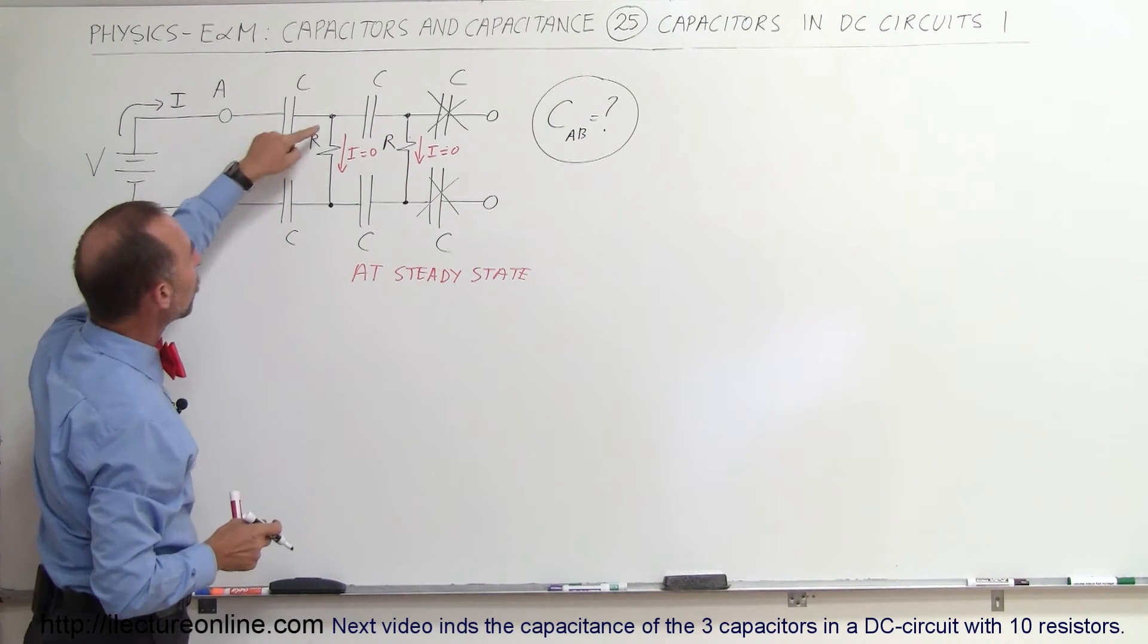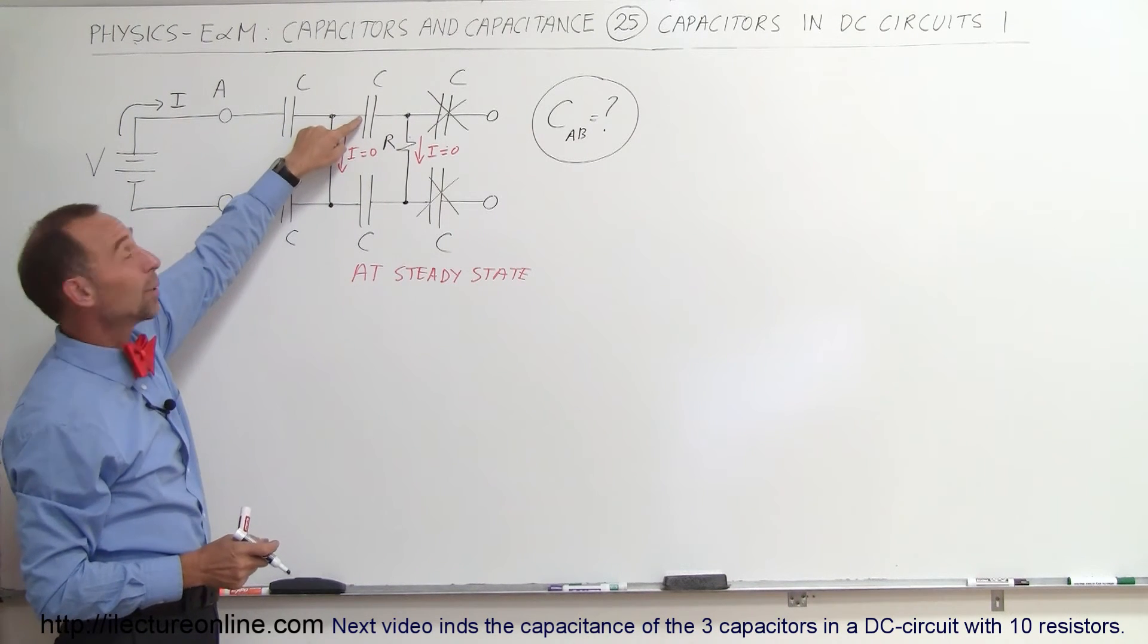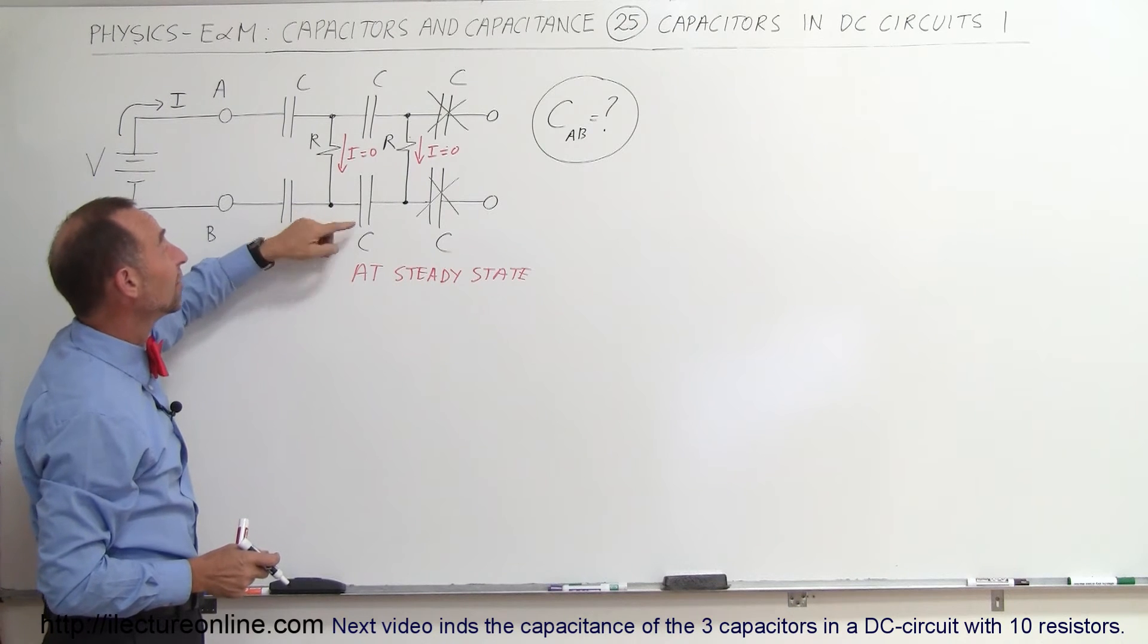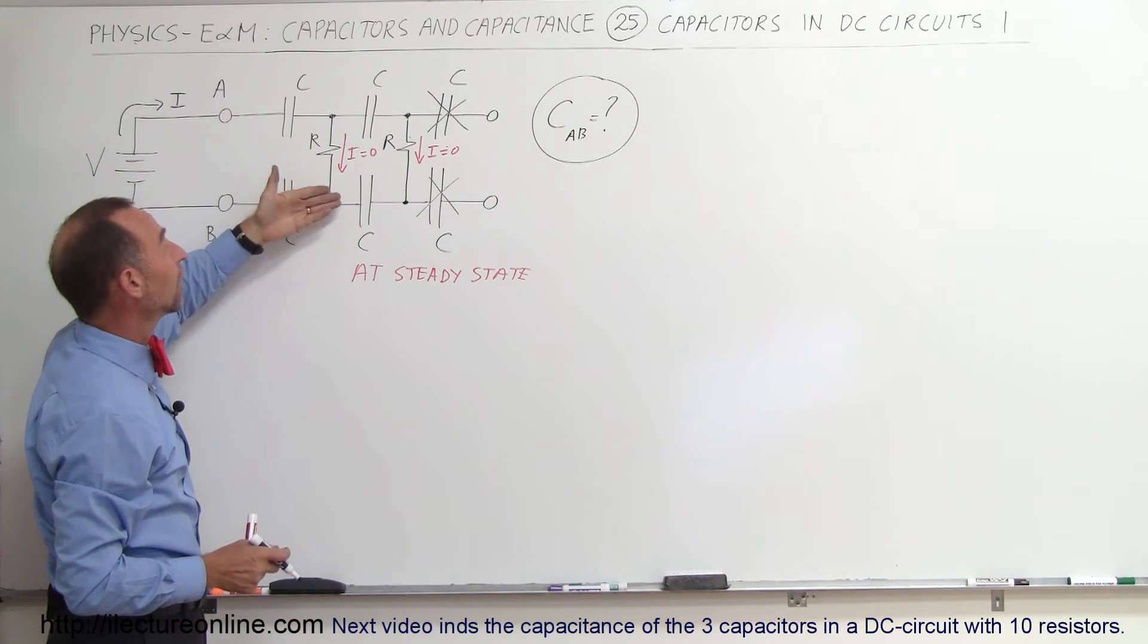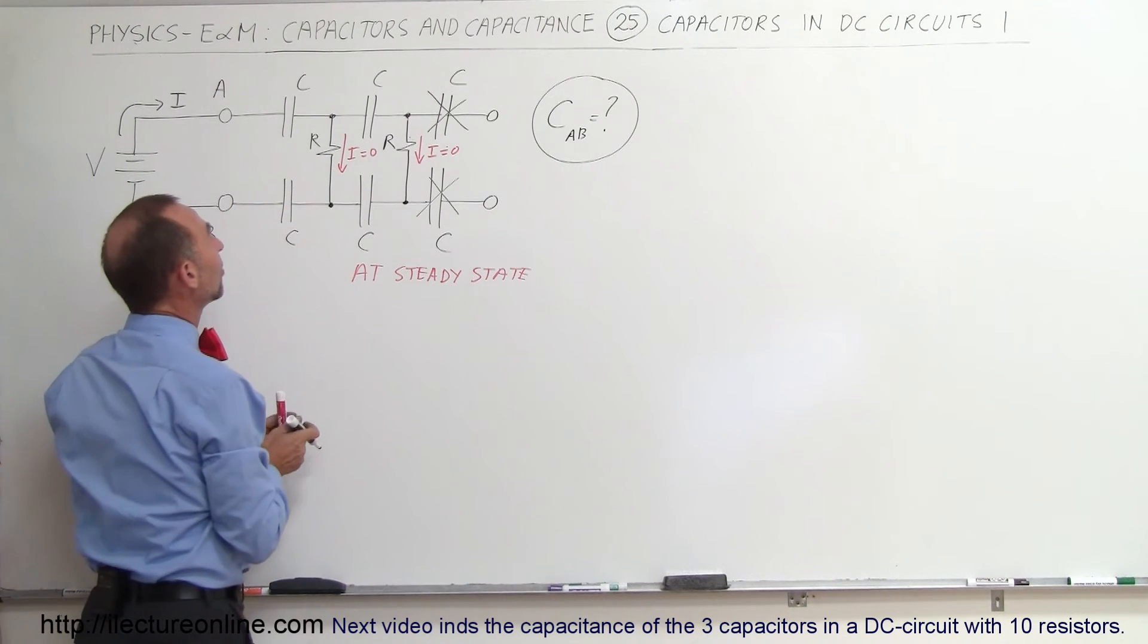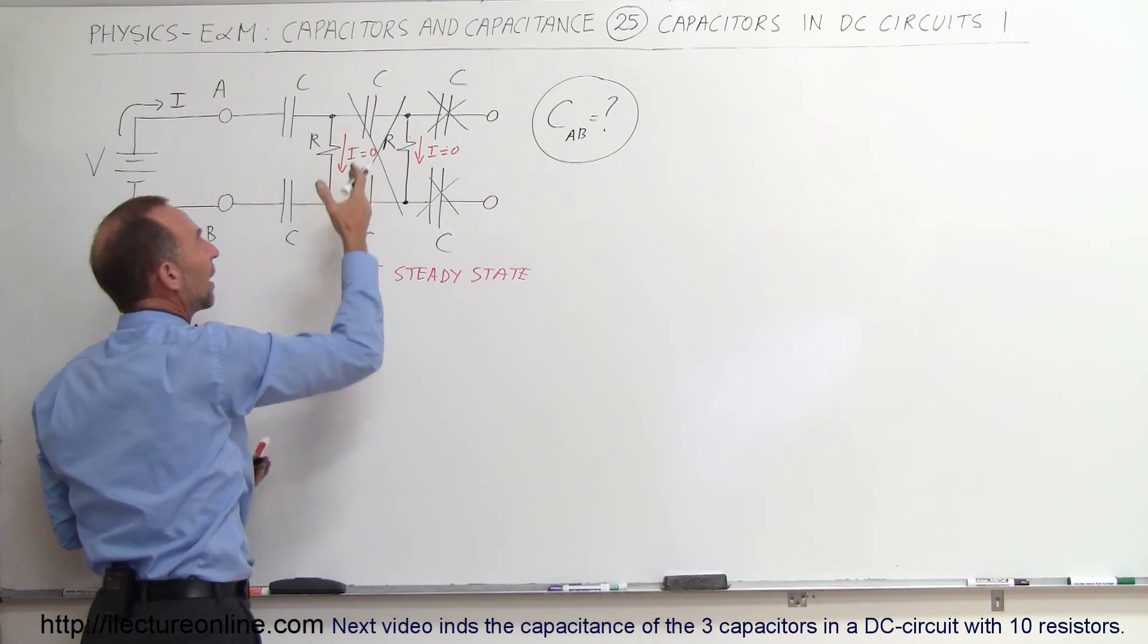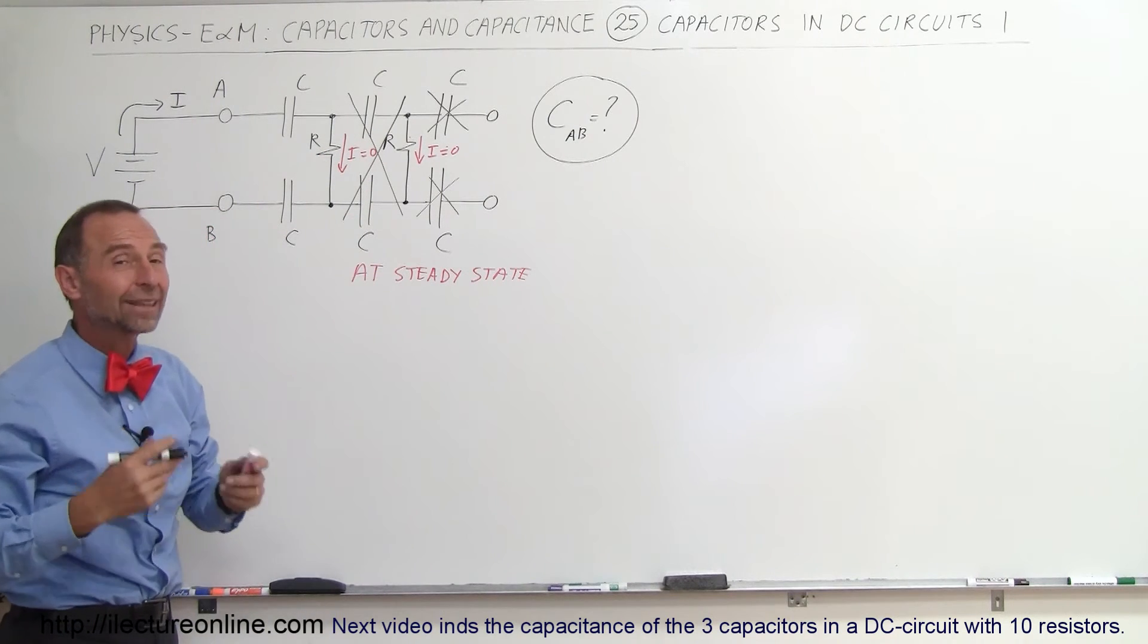So if there's no potential difference between this point and that point, therefore there's no potential difference between that point and this point, that means that no charges could build up. Because if this has to be at the same potential as this, that means that this is as if it's not there, we can just eliminate that, and therefore those capacitors act as if they're not there, they will not collect any charge.